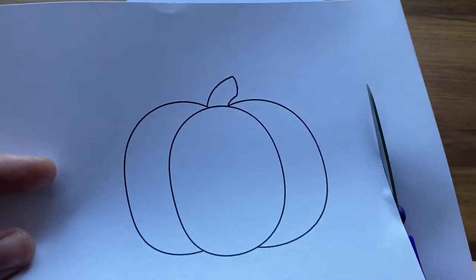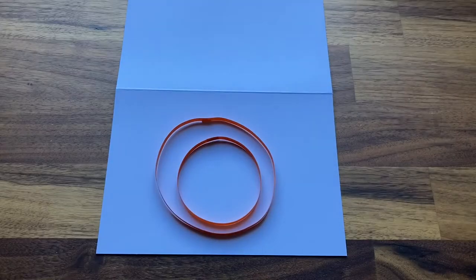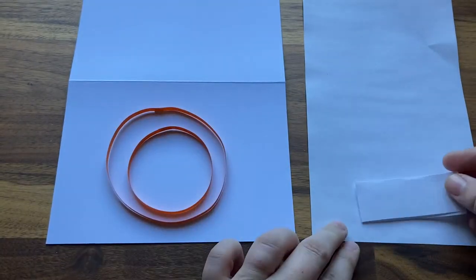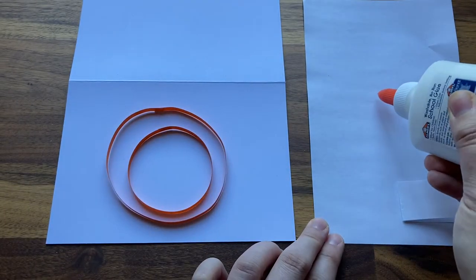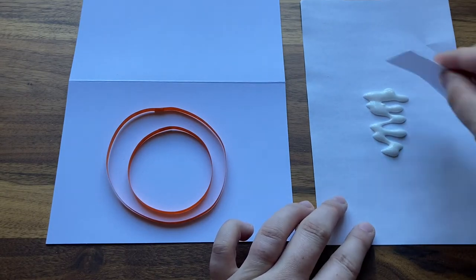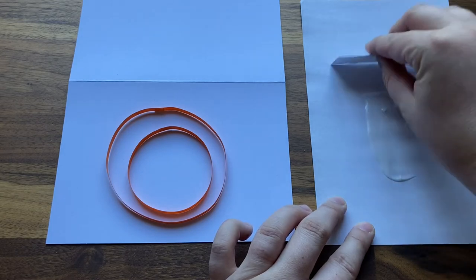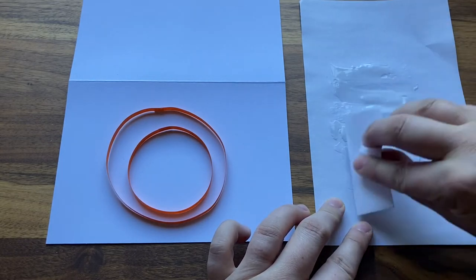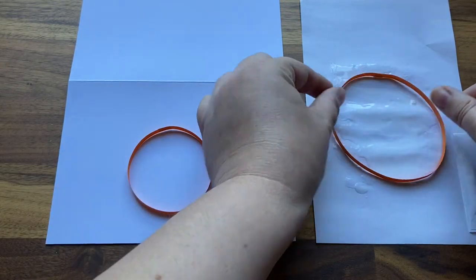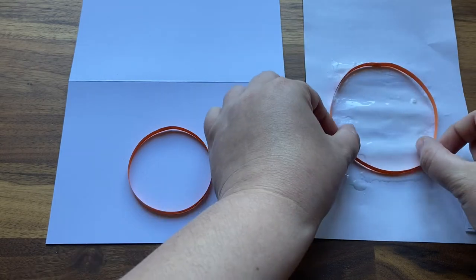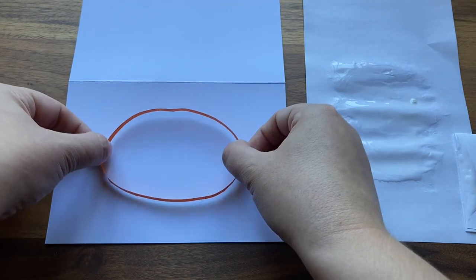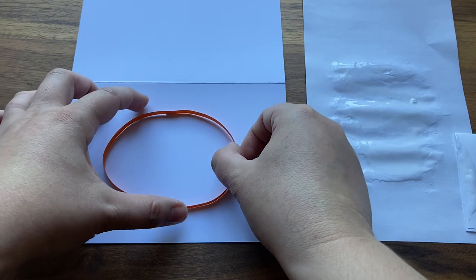Next you'll need your scrap paper. I'm cutting off a strip from my template since we no longer need it. Pour some liquid glue onto your scrap paper, then use that folded piece as a sort of scraper to level out the layer of glue. Next, take the larger of the two rings and lay it into the glue like this. Pull the sides of the circle outward to make it into an oval shape, then gently stick it onto the cardstock.